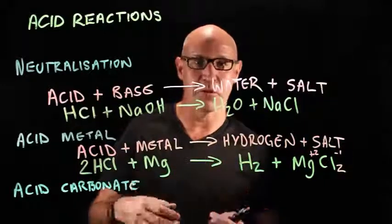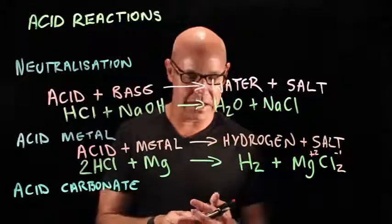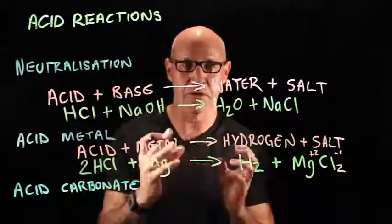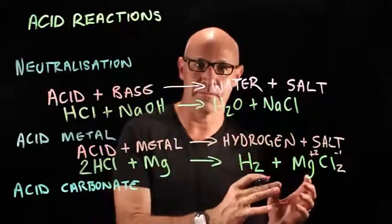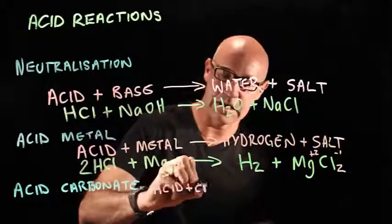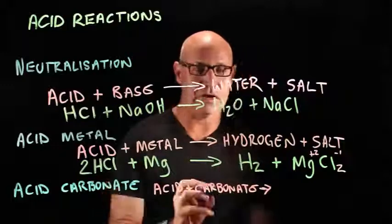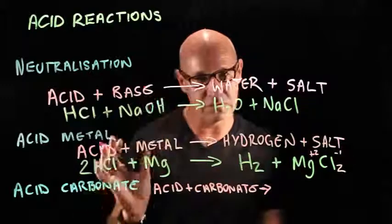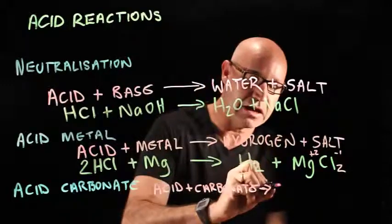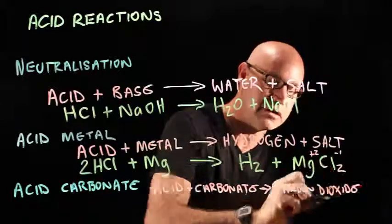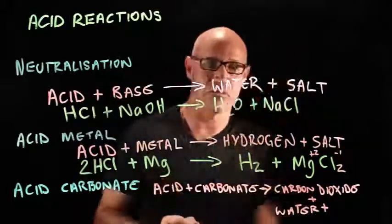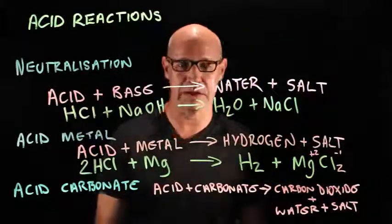We're going to do a fun experiment where we do the hydrogen pop test. The next type is acid and carbonate. A carbonate is a base that has a polyatomic ion called carbonate, CO₃. So acid plus a carbonate — what does that produce? A carbonate is a base, but also contains carbonate, so the trick is that it produces carbon dioxide gas, plus water because it's a base, plus a salt. The salt will depend on what type of carbonate is involved.